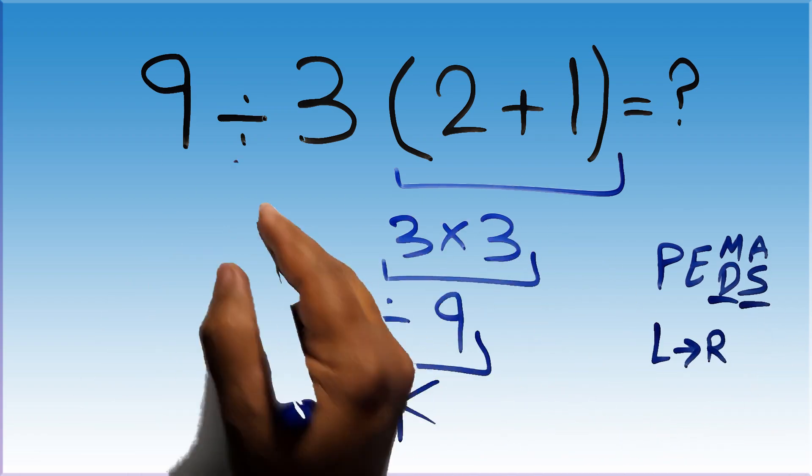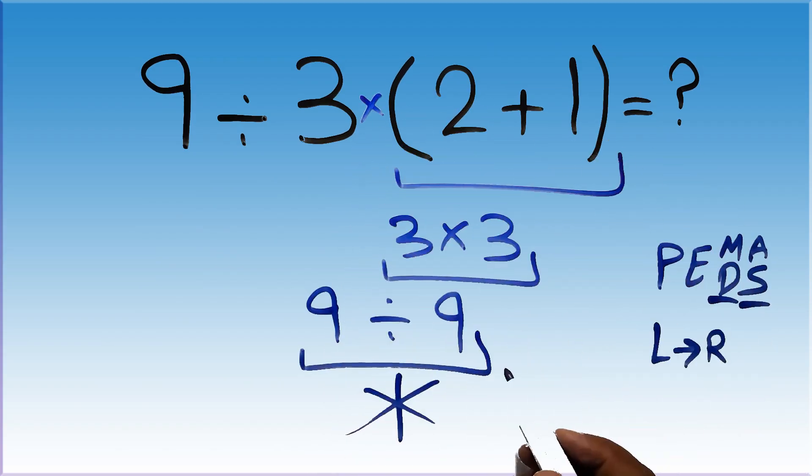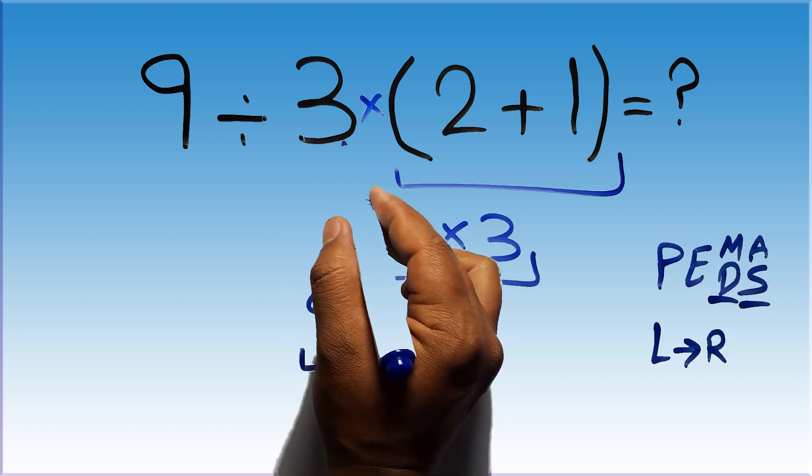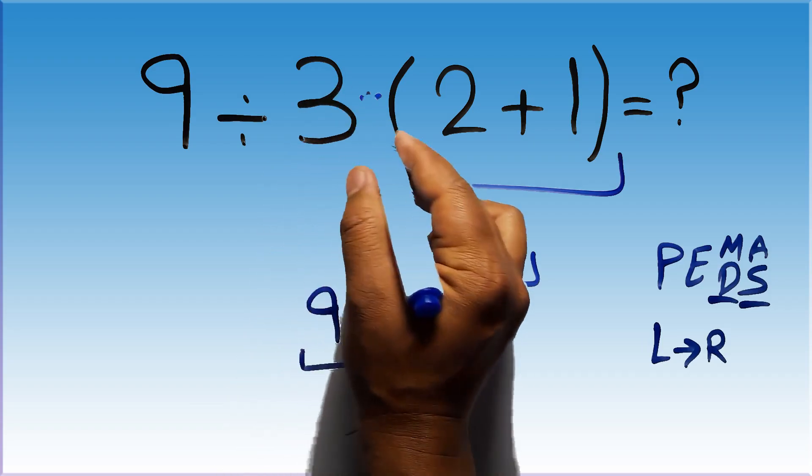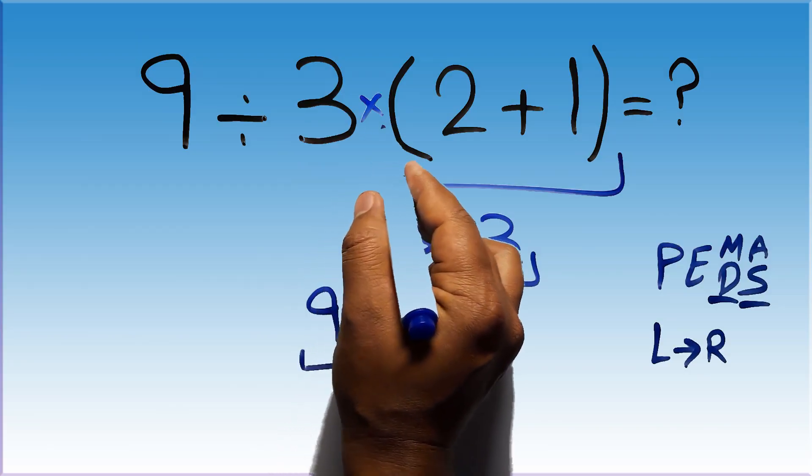this expression we have one division, one multiplication, and one parentheses. And here we have a multiplication because in mathematics, when a number is placed next to parentheses it means multiplication and we usually don't write the multiplication sign for brevity.